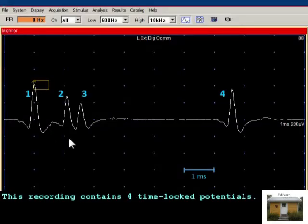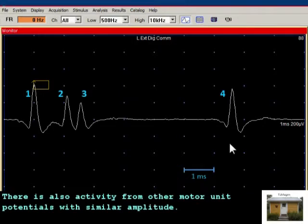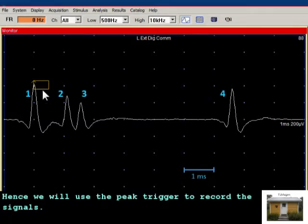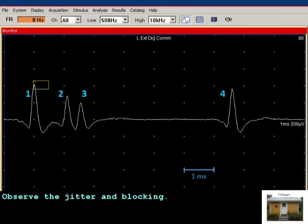This recording contains four time-blocked potentials. There is also activity from other motor unit potentials with similar amplitude, and hence we will use the peak trigger to record the signals. Observe the jitter and blocking.